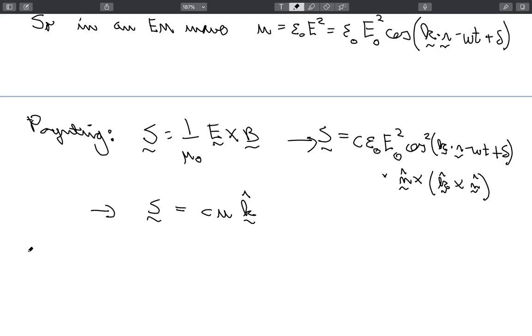Now, in terms of the momentum, again, things are quite simple. Because you'll remember that the momentum density was proportional to the Poynting vector, one over c squared times S. And in this case, it's just u over c with k hat. So again, really quite simple.